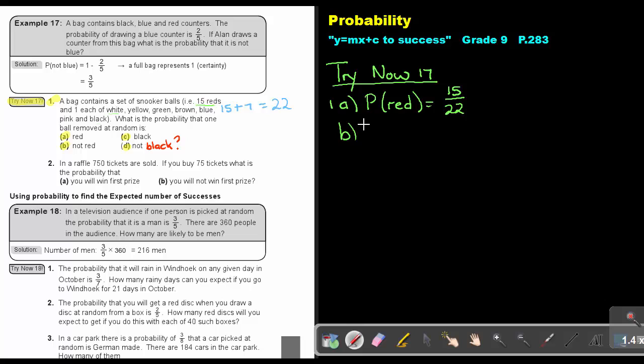so the probability of not red, and that will be a certainty, the full bag, minus that 15 over 22. Now if you don't want to use a calculator, just do it like this. Because this denominator is 22, 22 over 22 will be 1. And that will give me an answer of 7 over 22.